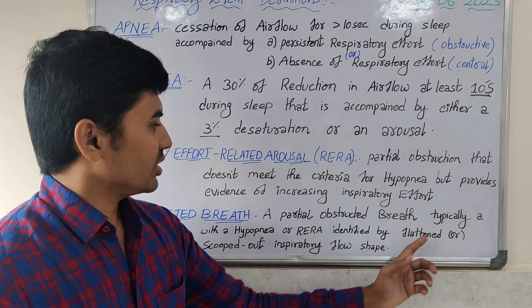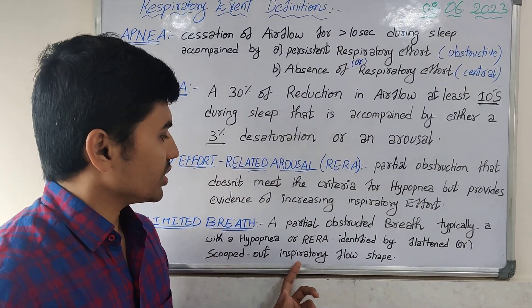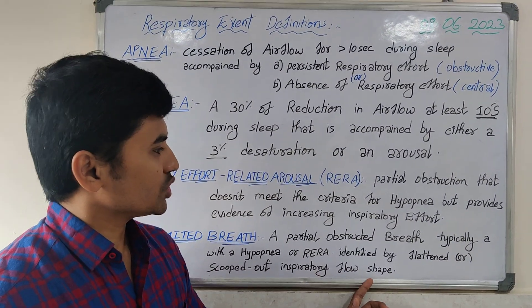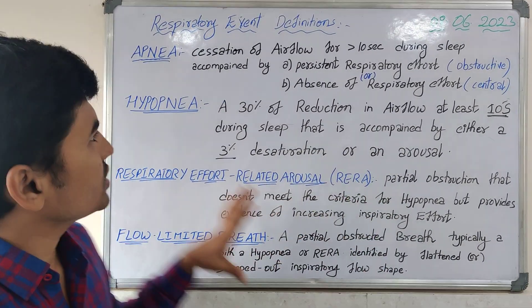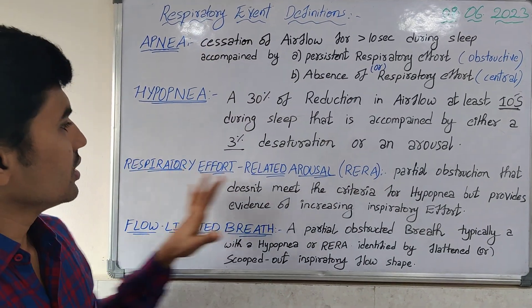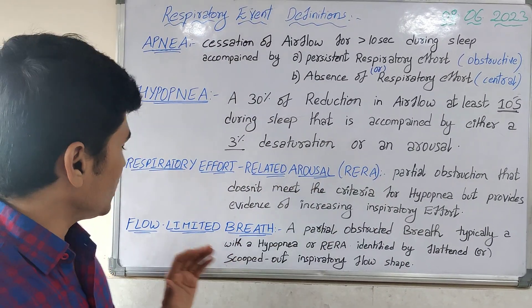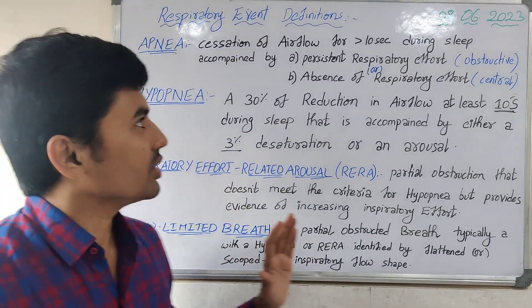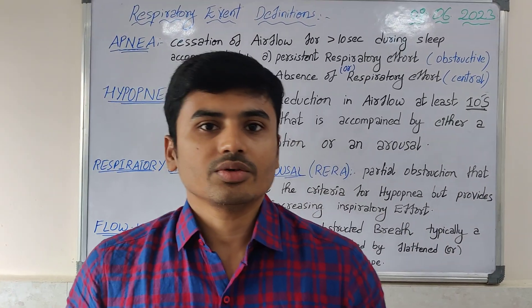A flow limited breath is a partially obstructed breath, typically with a hypopnea or RERA, identified by either a flattened or scooped out inspiratory flow shape. These are the definitions of apnea, hypopnea, respiratory effort related arousal, and flow limited breath. Thank you.